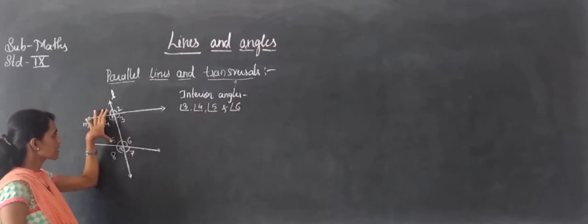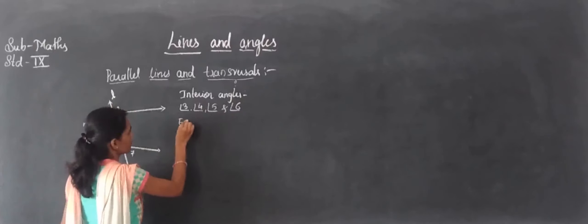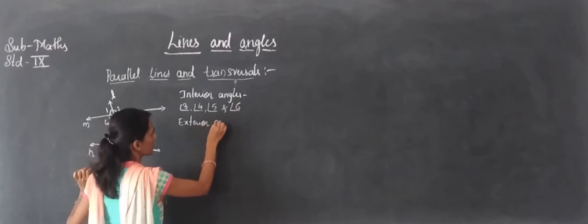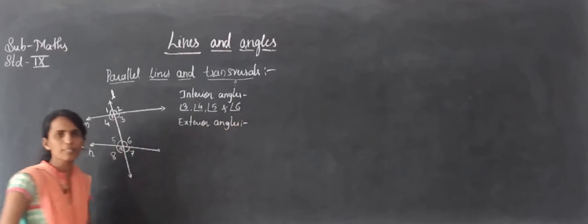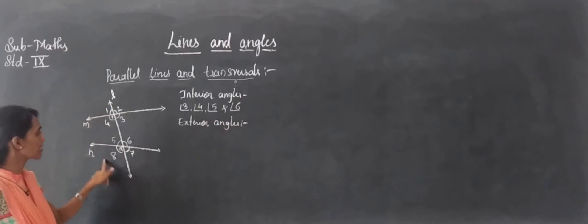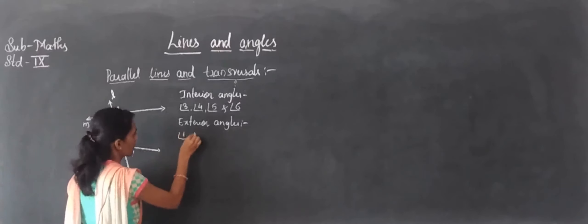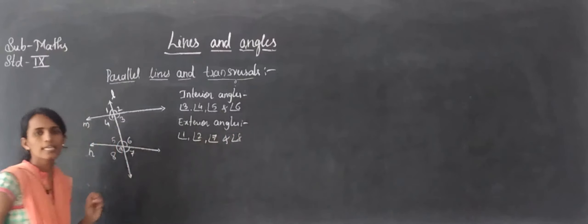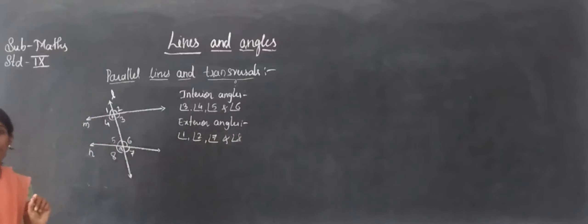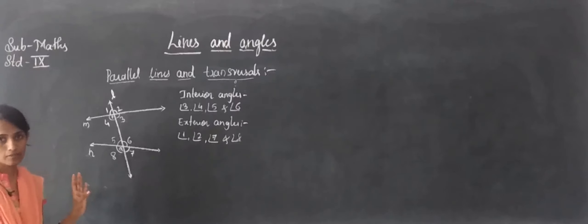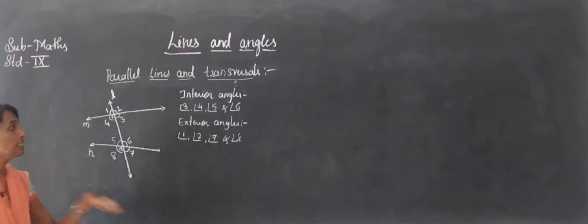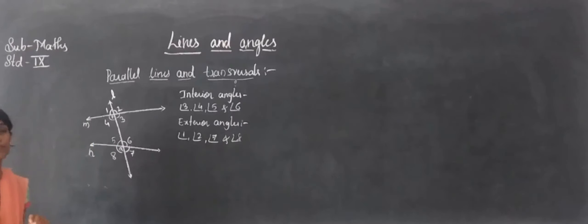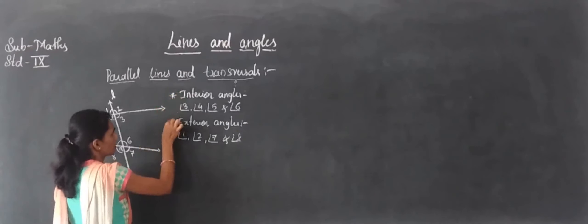Exterior angles are the outside angles: angles 1, 2, 7, and 8 are the exterior angles. When a transversal intersects two lines, a total of eight angles are formed — four interior and four exterior.